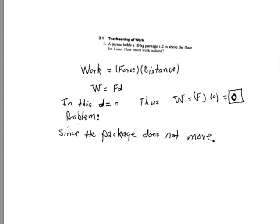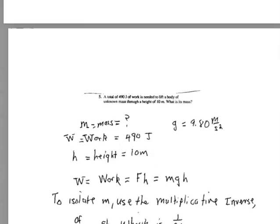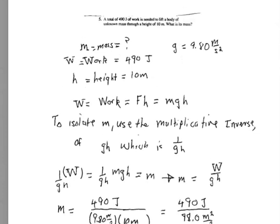All right, so that takes care of that problem. The package doesn't move, although there's a force on it, the work is, by definition, 0. Check out this problem. A total of 490 joules of work is needed to lift a mass of unknown mass through a height of 10 meters. You're lifting it against the gravitational force. What is its mass?